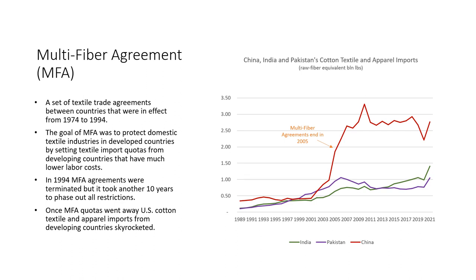The goal of the MFA was to protect domestic textile industries in developed countries such as the United States and Western Europe by setting textile import quotas from developing countries that have much lower labor costs. As expected, the agreements raised domestic textile prices in developed countries. The U.S. had 40 bilateral export restraint agreements by 1994. In 1994, MFA agreements were terminated, but it took another 10 years to phase out all restrictions. Once MFA quotas went away, U.S. cotton textile and apparel imports from developing countries skyrocketed. China, India, and Pakistan's share of all cotton textile and apparel imports increased from 24 percent in 1989 to 51 percent in 2021.